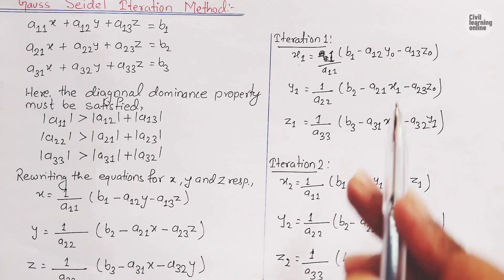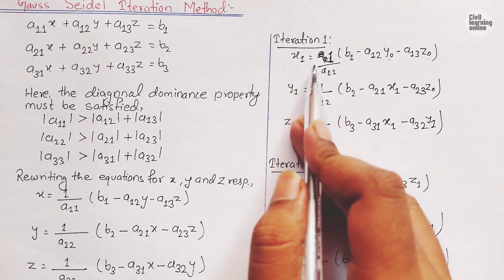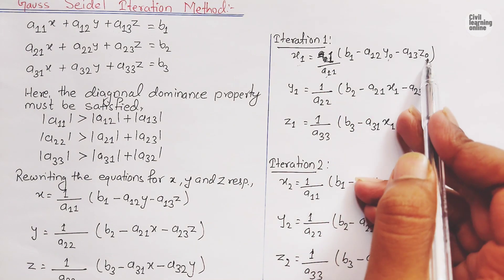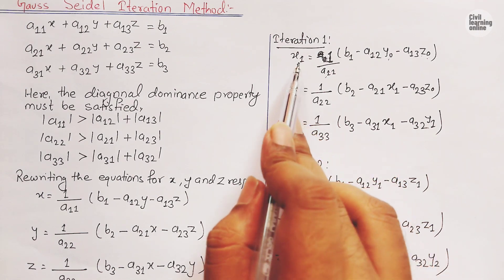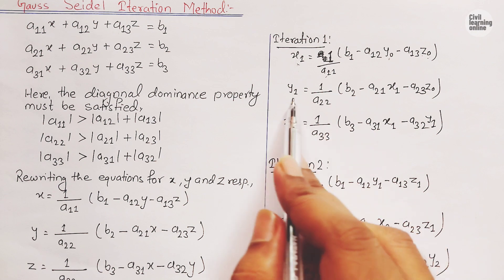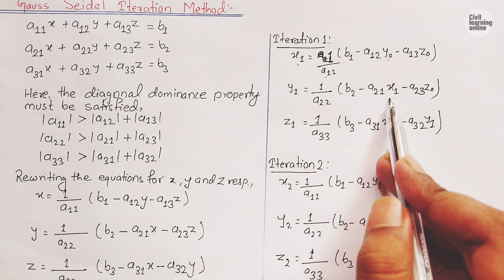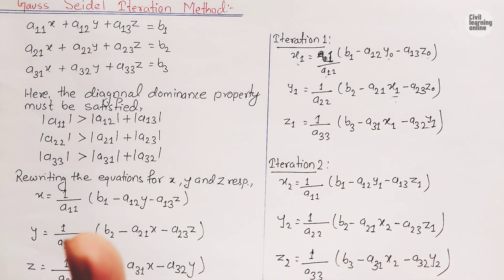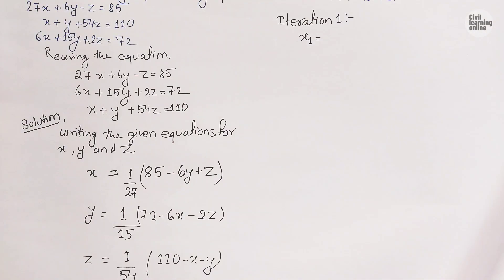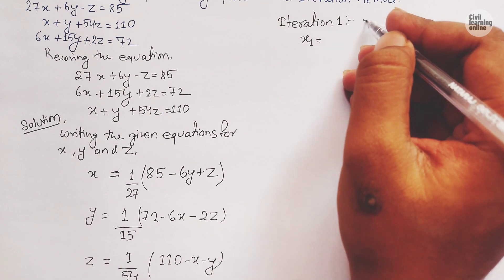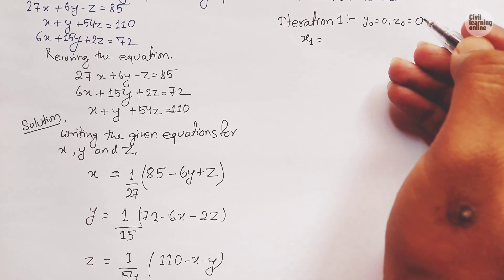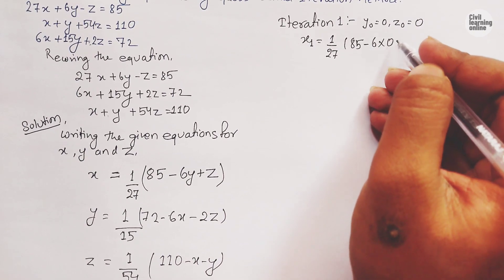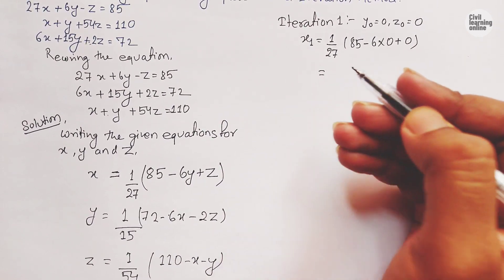Once we get the value of x1, we supply this x1 value to the y1 equation, because x appears in that equation too. We provide the most recent value to the succeeding equation - this is key to the Gauss-Seidel method. So for x1: x1 = (1/27)(85 - 6×0 + 0) = 3.1481.